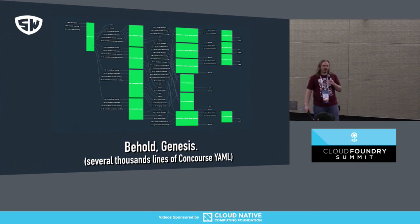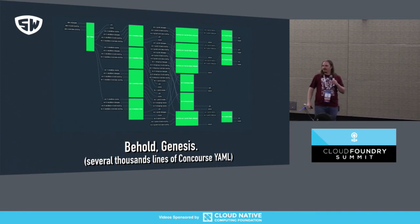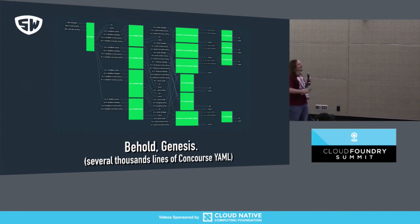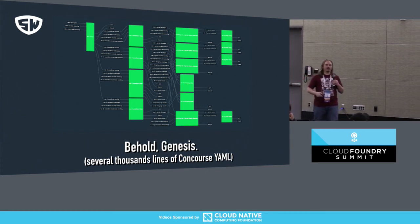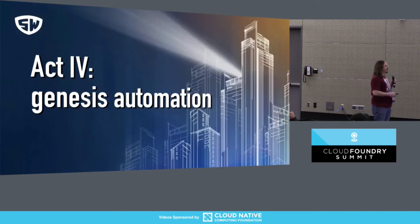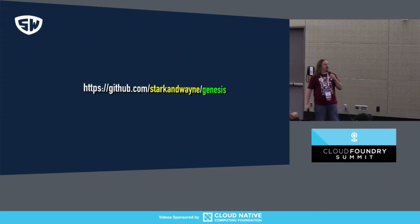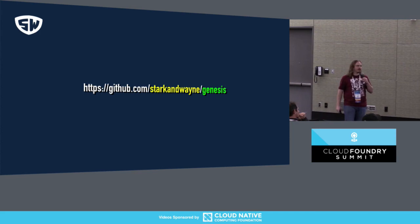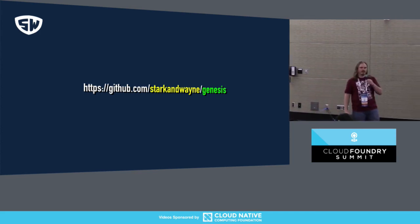People get a little leery when you say 'we're just going to have Concourse deploy all the things all the time whenever anything changes — we'll let the users know when it's down.' This is the culmination of our automation with Concourse because it takes all the things that are hard about operations and turns them into things that are easy. It is available on the Stark & Wayne GitHub under slash-Genesis. It is open source and it is fantastic.